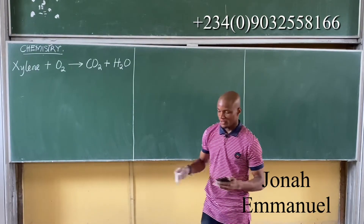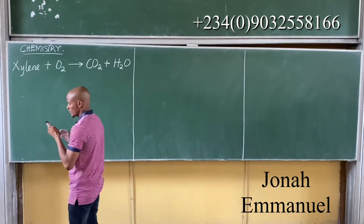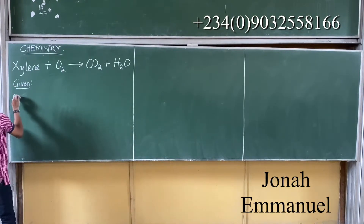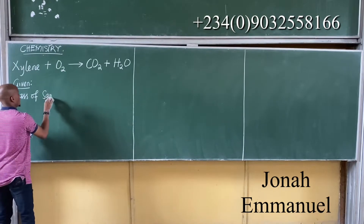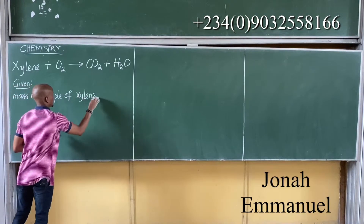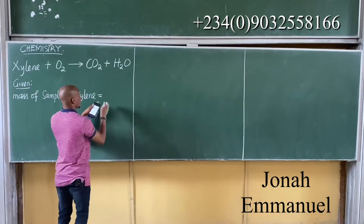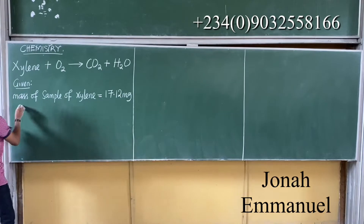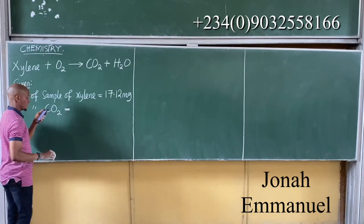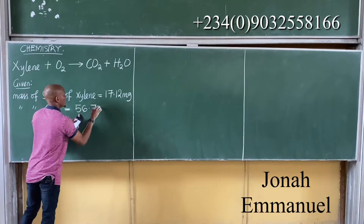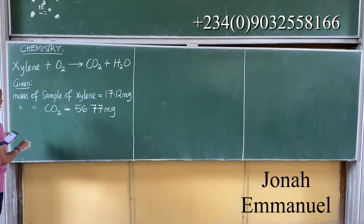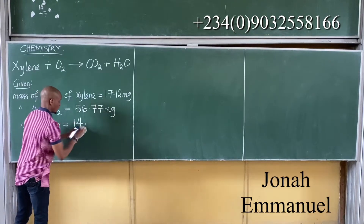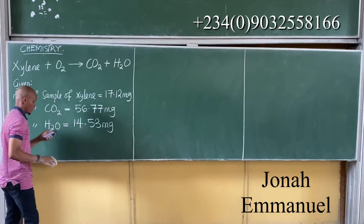Let me now identify the given parameters. I am given the mass of sample of Xylene as 17.12mg. I am also given the mass of carbon dioxide as 56.77mg. Finally, I am given the mass of water as 14.53mg. So these are the three given masses in the question.